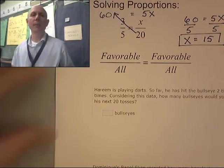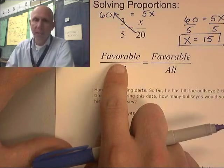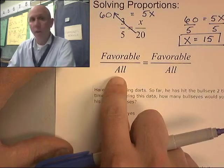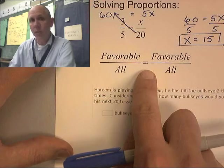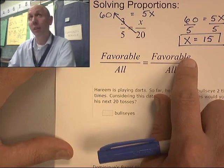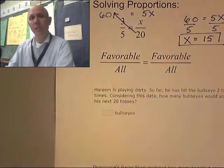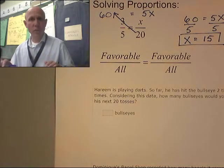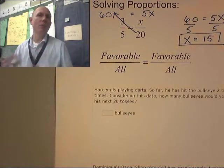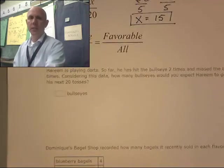Here's how it's going to set up with the probability. We're going to be looking at the favorable outcomes over all possible outcomes and setting that equal to favorable outcomes over all possible outcomes. We're going to set up these two ratios, set them equal to each other, and we're going to solve it. Let's see how this works out.